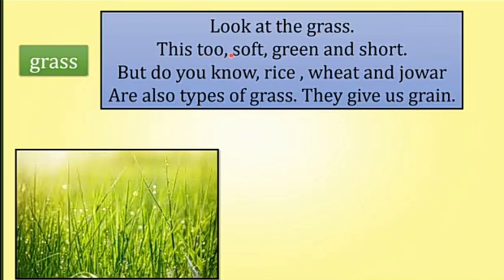This is too soft, green and short. But do you know that Chowl, Dundam and Jawar are also a grass of grain? They give us grain which gives us energy.